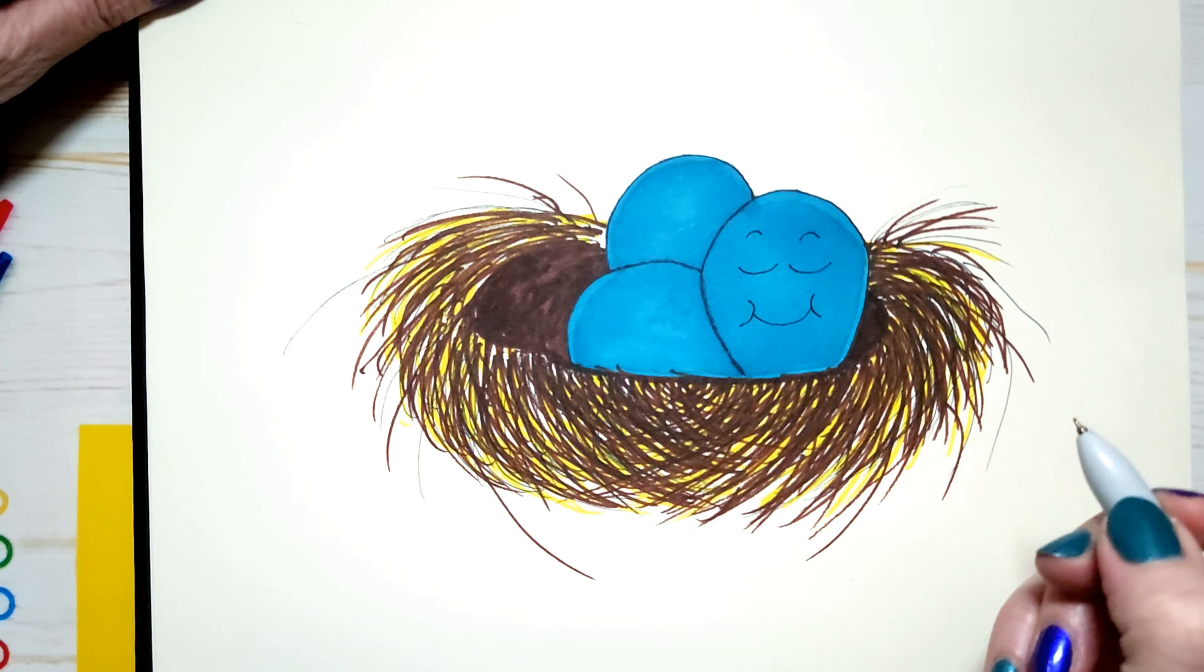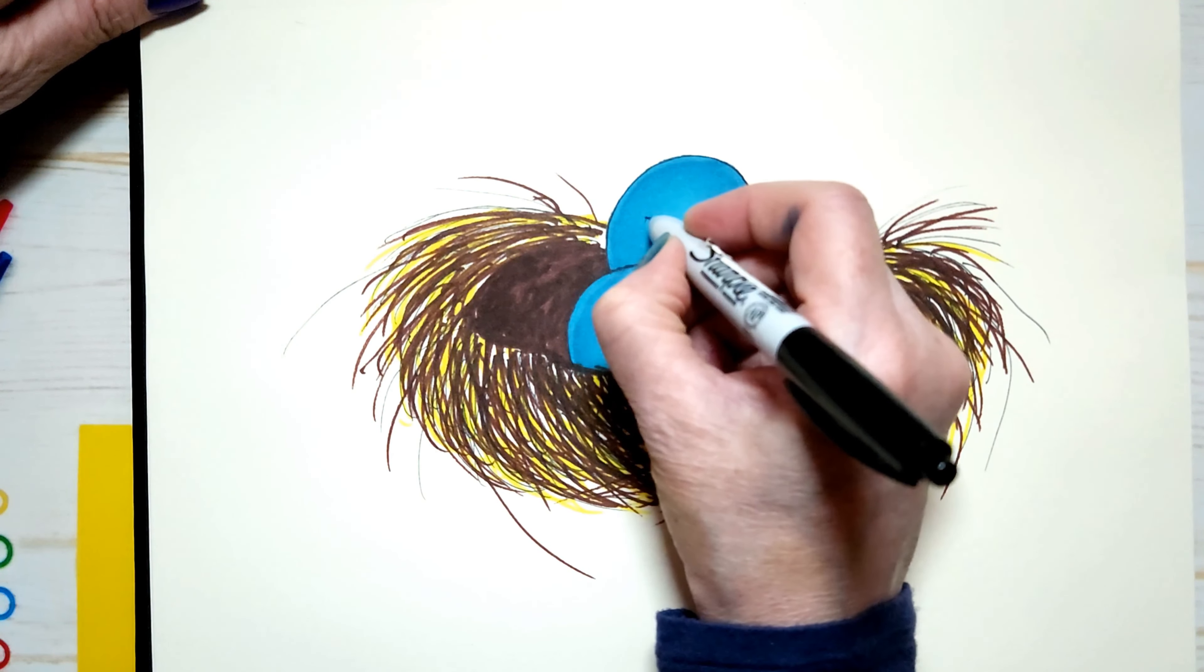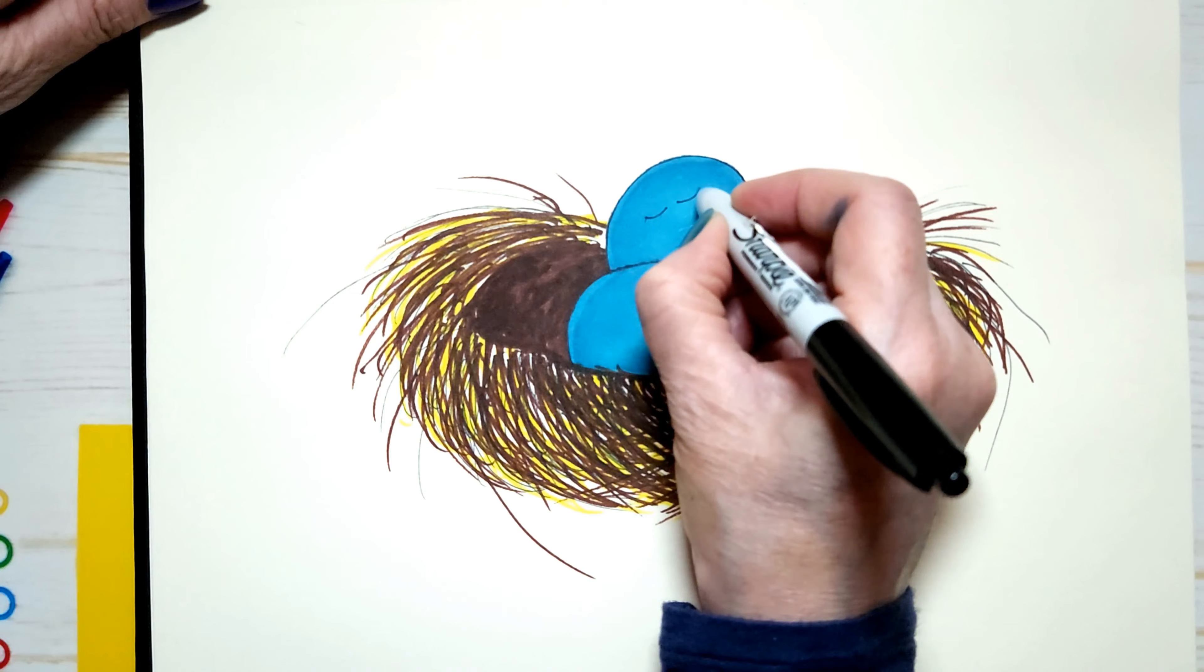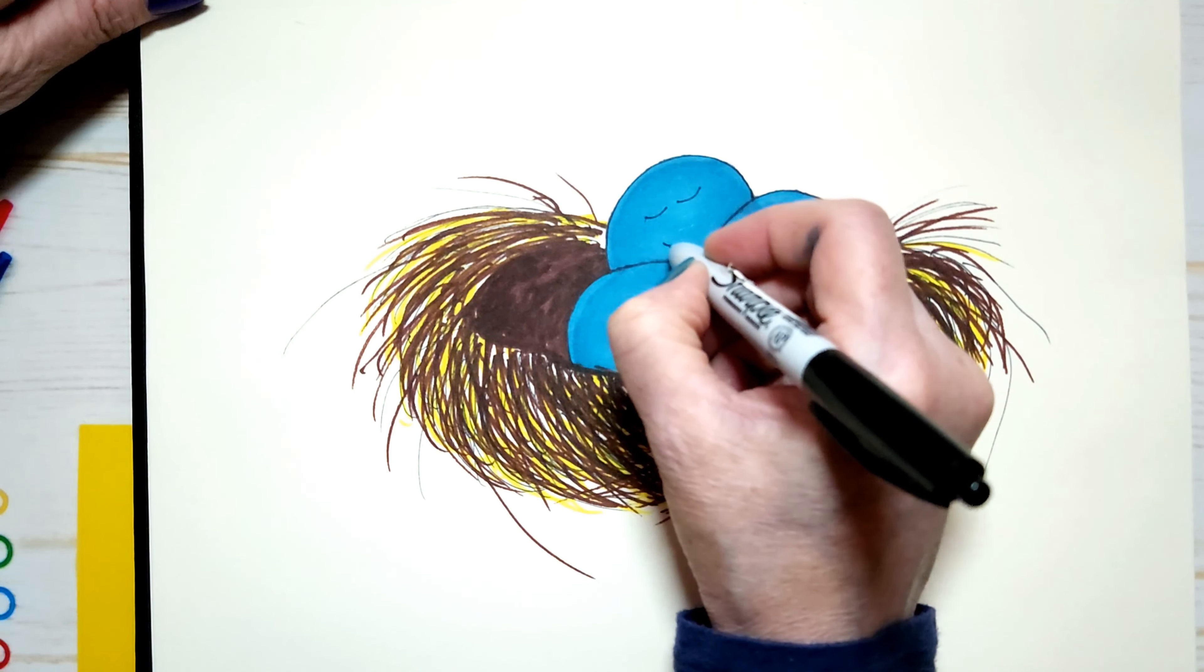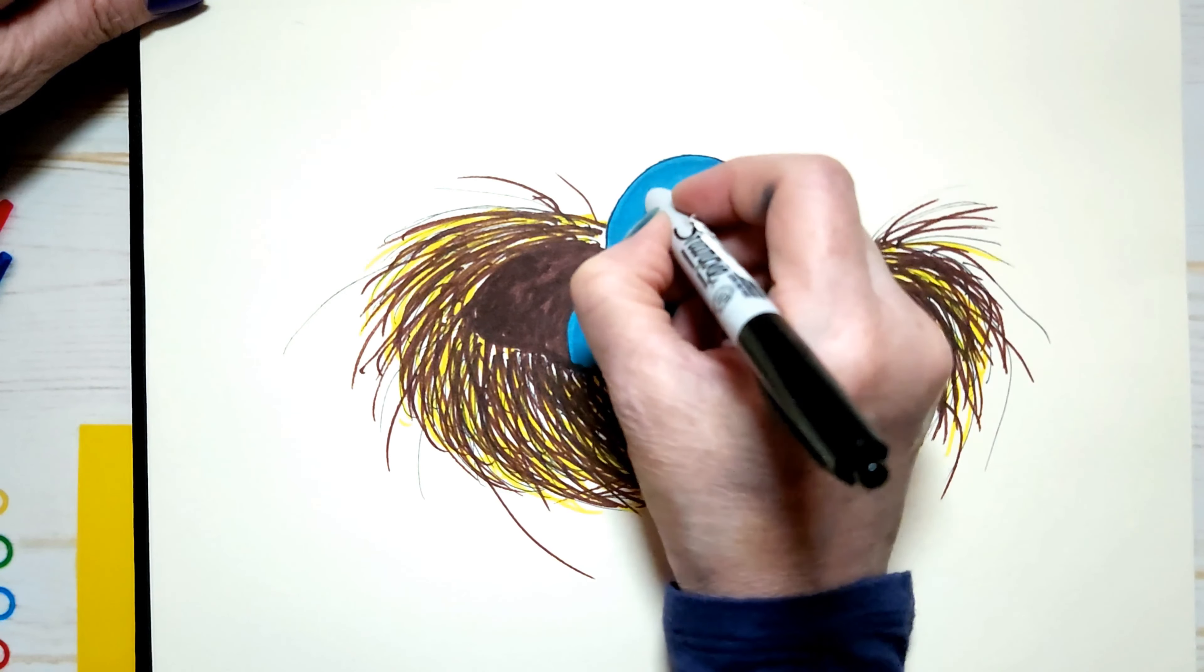And we're going to do the same thing. This one's sleeping on his side. Like that. And a little smile here. Here. And some eyebrows. There we go.